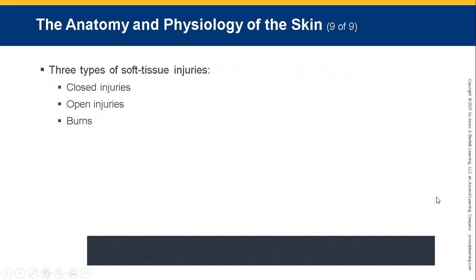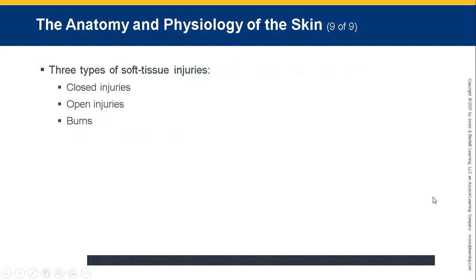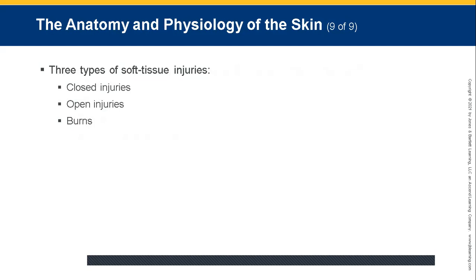There are three types of soft tissue injuries we'll focus on: closed injuries, open injuries, and burns. Now let's look at the pathophysiology of closed and open injuries.